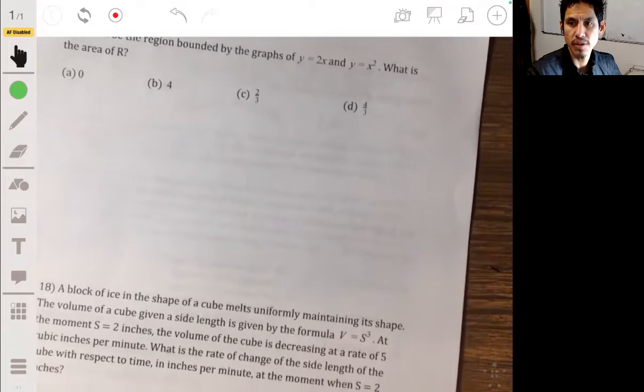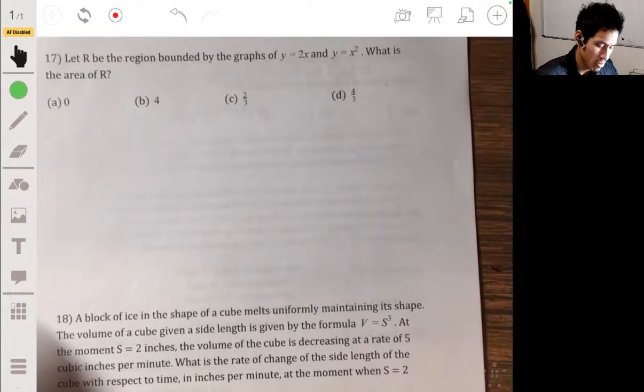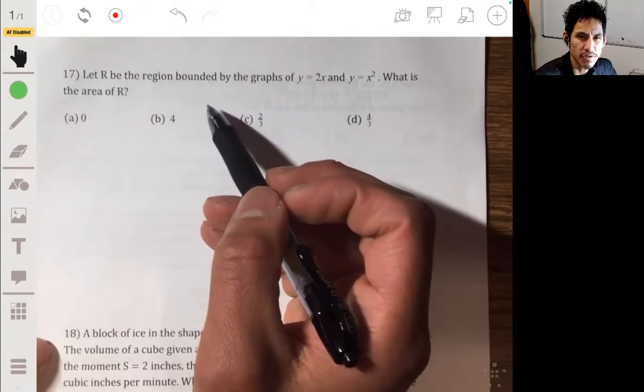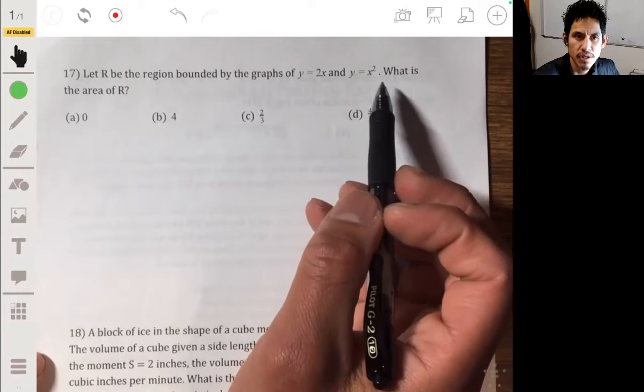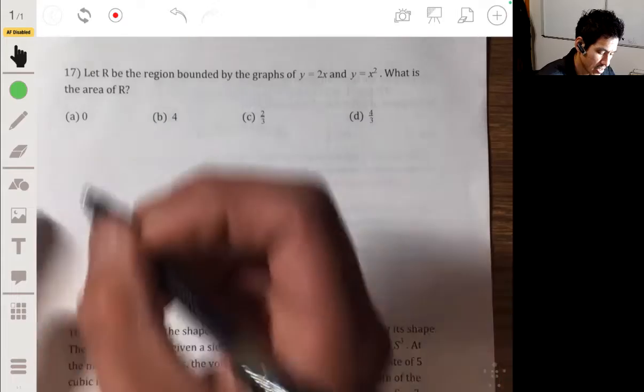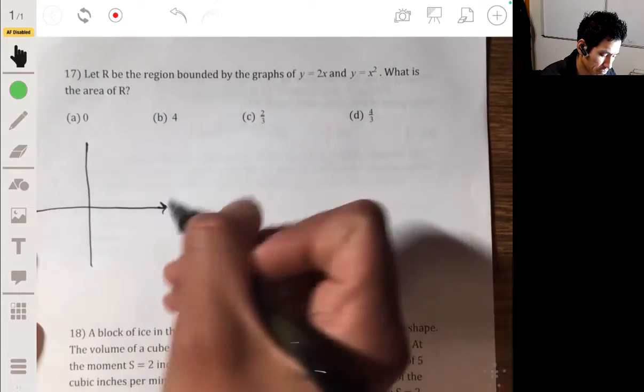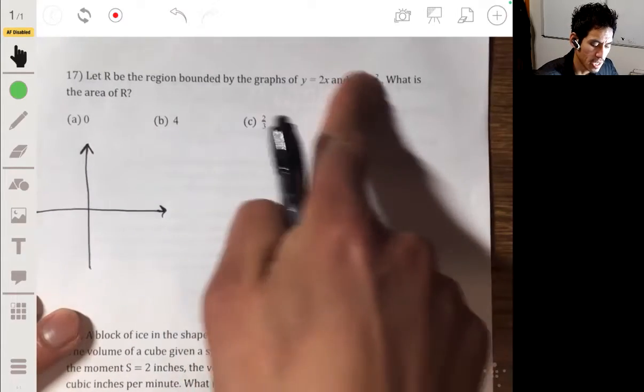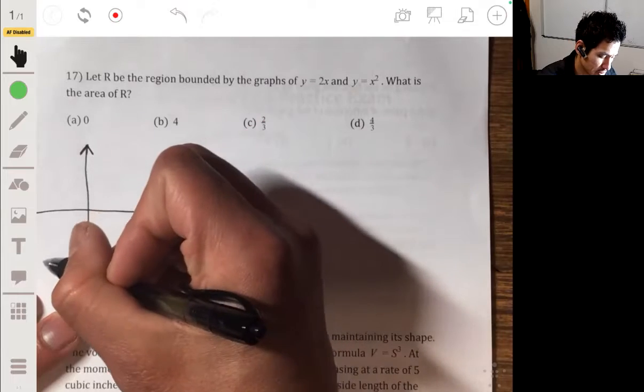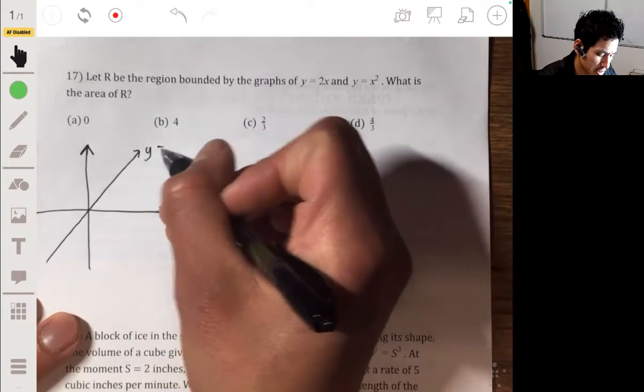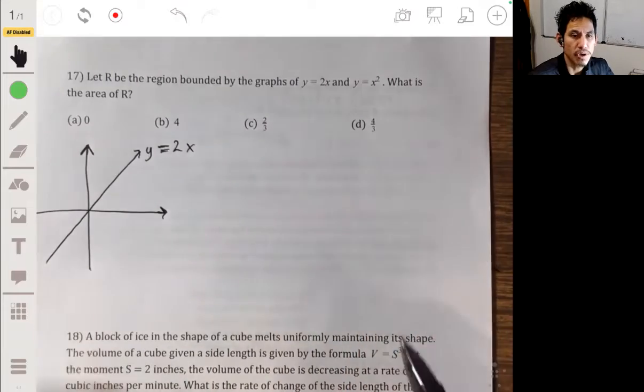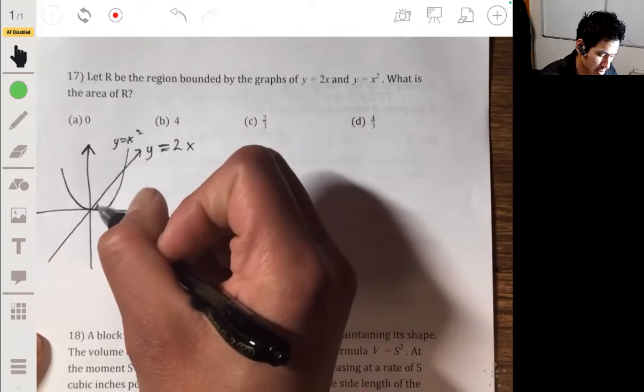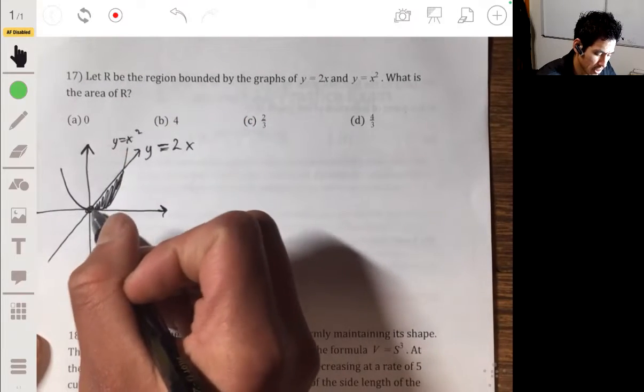Okay, moving on to number 17. Here we have R, it's going to be the region bounded by the graphs of y equals 2x and y equals x squared. We want to find the area of R. So this is just going to be using the integral to represent what area is being trapped between these two lines. So y equals 2x is going to be a linear equation. Y equals x squared, we know, we should know that's parabola. So we're going to be looking for this region.